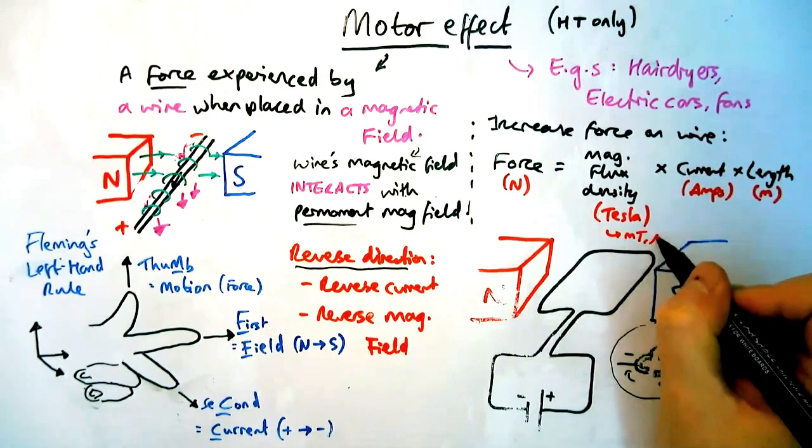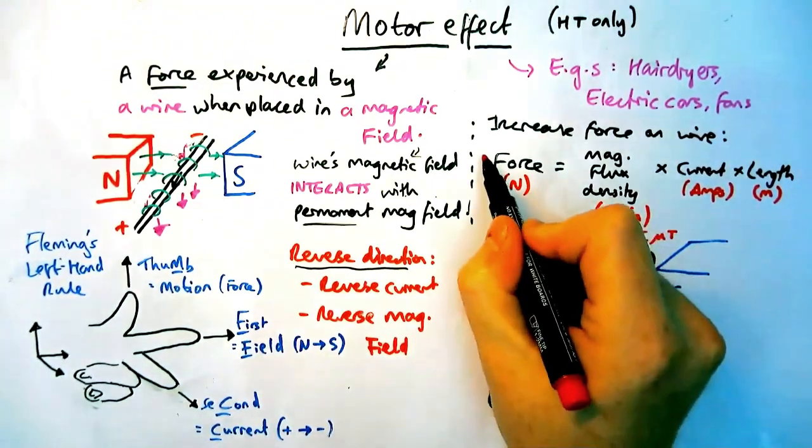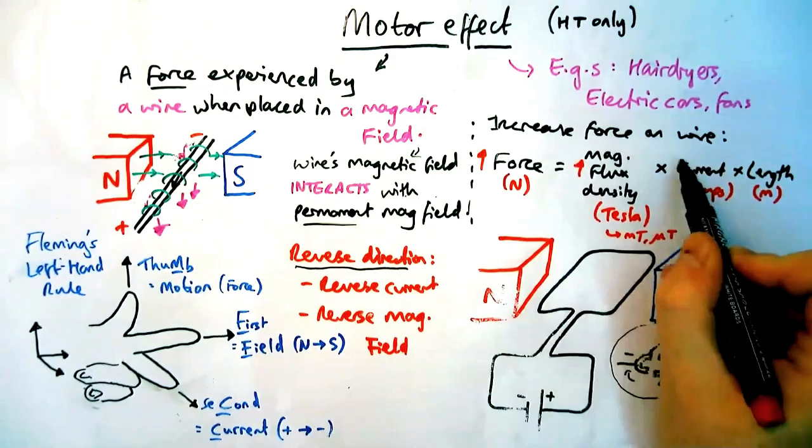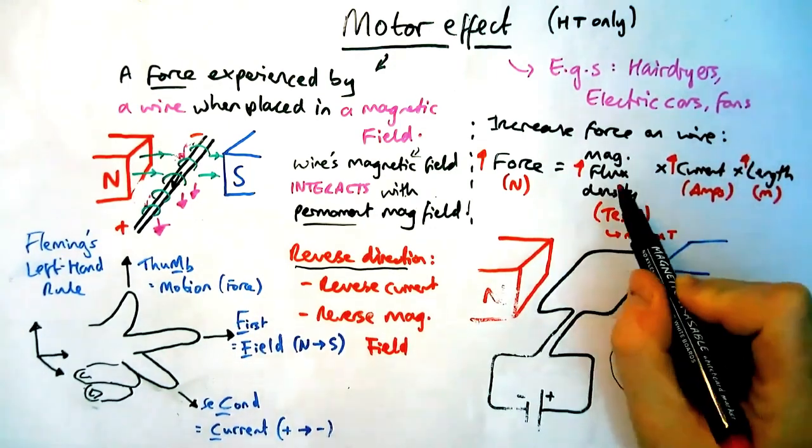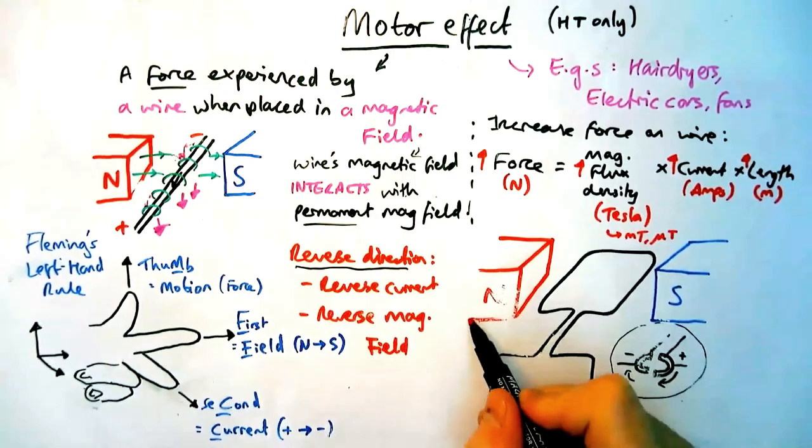Normally it's quite a low number so you'll quite commonly see milli or micro tesla so that's a thousandth or a millionth of a tesla. Now if I were to increase any of these things they would result in the force increasing, or if I were to decrease any of them that would result in the force decreasing.